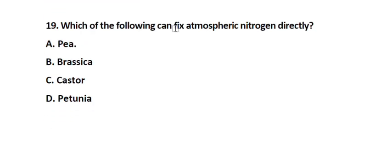Question number 19. Which of the following can fix atmospheric nitrogen directly? Option A. Pea, Option B. Brassica, Option C. Castor, Option D. Petunia. The correct answer is Option A. Pea.